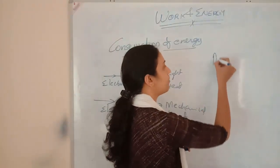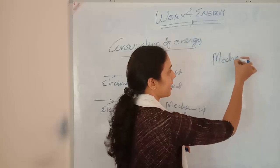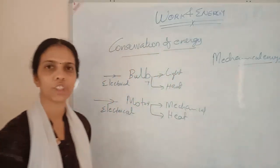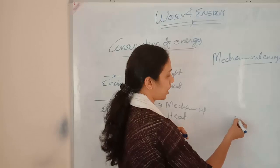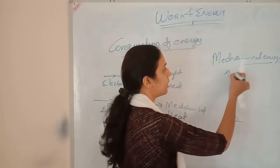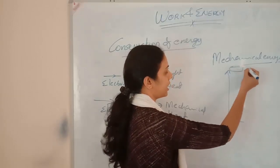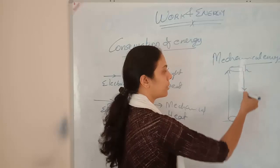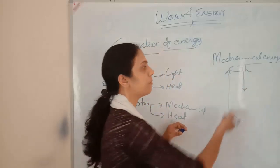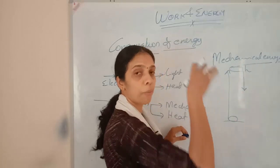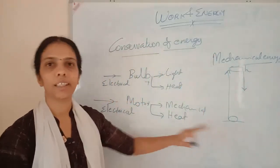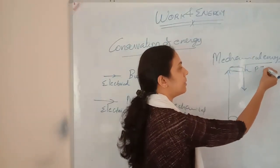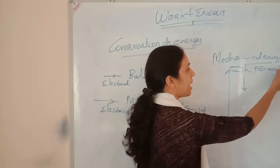In the case of mechanical energy, let us consider an object taken to a particular height h, or dropping from that height down to the ground. While considering this, at a particular height h, what is the energy existing there? The energy is mgh — that is potential energy.